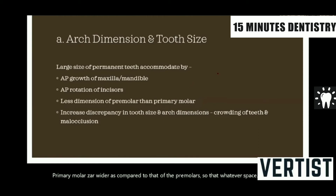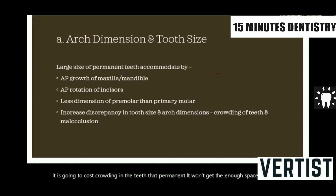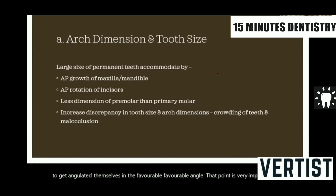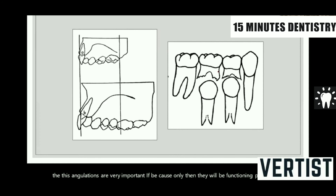If these spaces are not present, or if the erupting tooth size is much larger than the jaw size, it will cause crowding. The permanent teeth won't get enough space to come into proper position or direction, and they will not get the space to angulate themselves at a favorable angle. That point is very important. Teeth are angulated, and even mandibular incisors are angulated, though their angulations are less, whereas all other teeth are angulated in various directions. These angulations are very important because only then they will function properly and bear the occlusal forces. That is why eruption into the required space is very important.